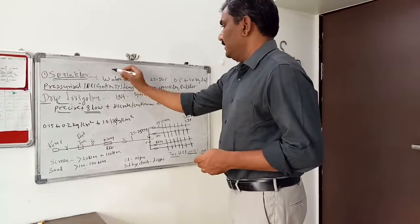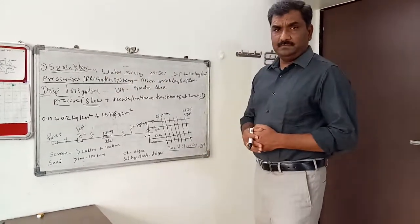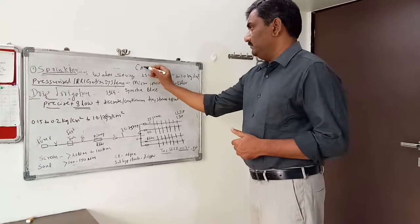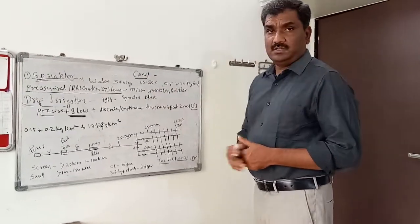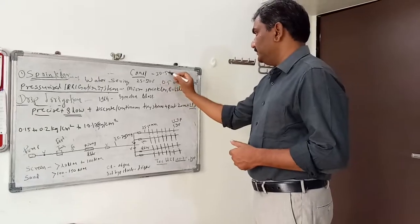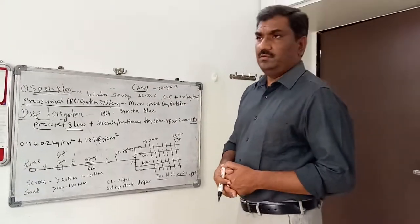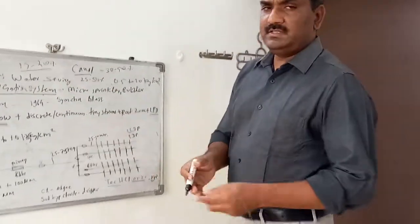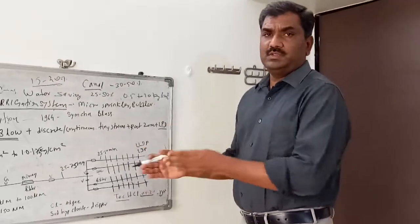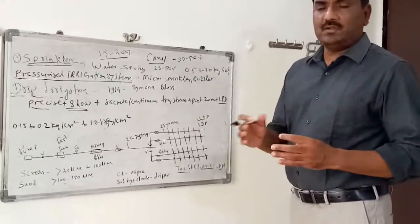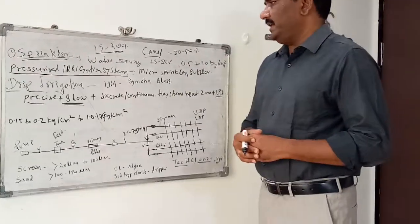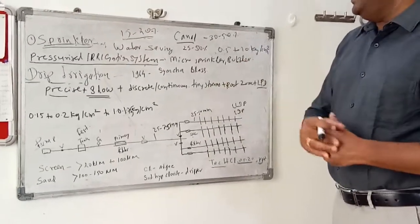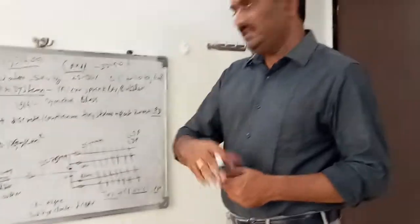Generally in surface irrigation methods there are heavy conveyance losses. In canal irrigation, the loss of water in conveyance is around 30 to 50 percent, whereas in well irrigation it is around 15 to 20 percent. Conveyance loss means water lost during transport from the source to the field. To avoid this, we can irrigate the field by bringing water in a pipe and applying it in the form of rain.